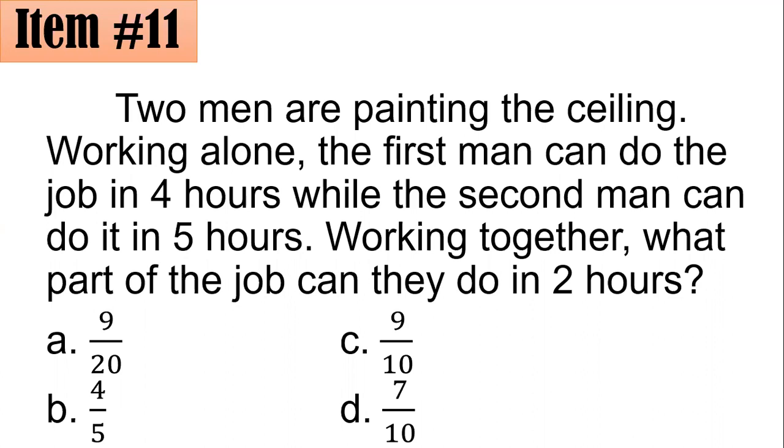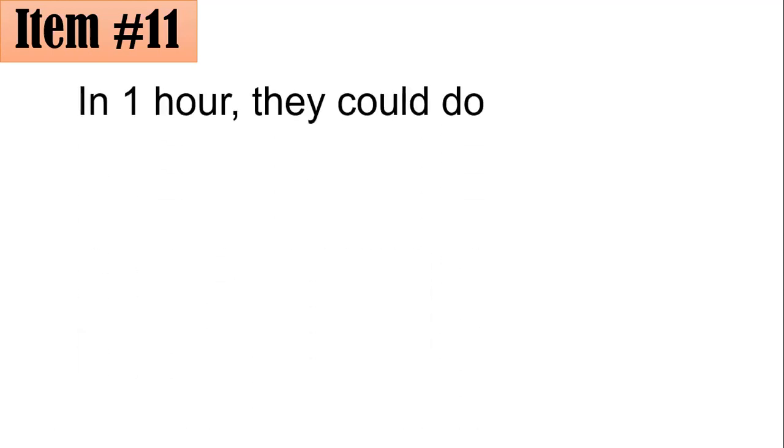Working together, what part of the job can they do in two hours? Is it 9 over 20, four-fifths, 9 over 10, or 7 over 10? To solve this problem, it is important to note what part they can do in one hour. In one hour, they could do the following.